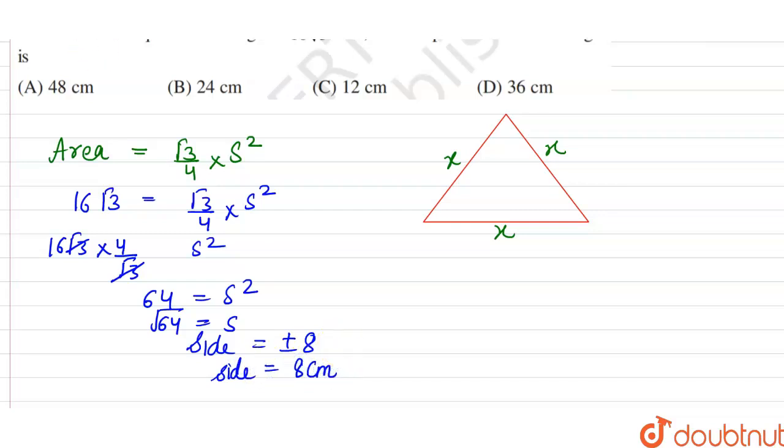Now we have to calculate the perimeter of the equilateral triangle. Perimeter of an equilateral triangle is side + side + side. So side is 8, so 8 cm + 8 cm + 8 cm.